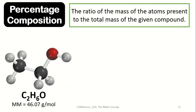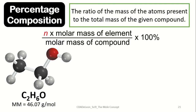Percentage composition refers to the ratio of the mass of the atoms present to the total mass of the given compound. The percentage composition can be computed using the formula: n multiplied by the molar mass of the element, divided by the molar mass of the compound, multiplied by 100. The n refers to the number of atoms of that element.